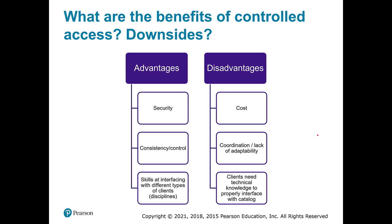Now imagine we go from this uncontrolled library to a controlled library. We have a person standing there. What advantages does that person give us? Well, the first one is security — you don't get access to the library or the books unless you have a library card. We also get the advantage of consistency and control. As this librarian controls access to the library, they're going to make sure that books are filed in the right way.